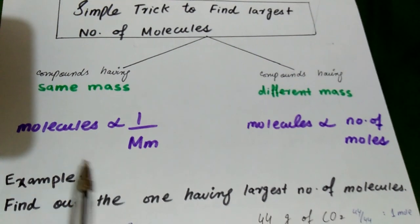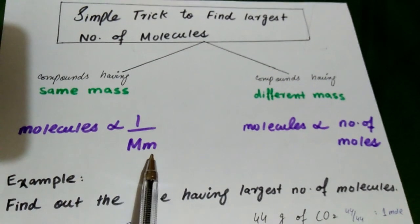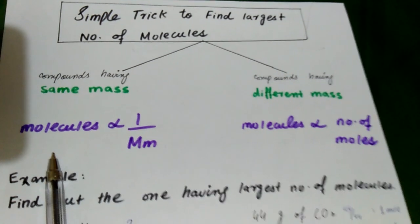If they have the same mass, then what do we have to say? We have to write all of them in front of them, molecular mass. And which molecular mass will be the lowest, the number of molecules will be the highest.